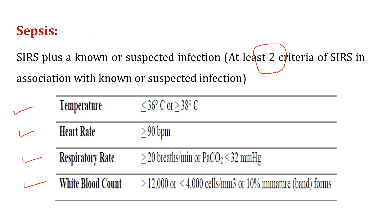Your patient is considered to be in a sepsis state or to have developed Systemic Inflammatory Response Syndrome if they have two or more of the following criteria: number one, temperature — either hypothermic or hyperthermic; number two, heart rate — if your patient has tachycardia; number three, respiratory rate — if your patient has tachypnea, with partial pressure of carbon dioxide less than 32 mmHg; and finally, white blood cell count above 12,000 or less than 4,000.